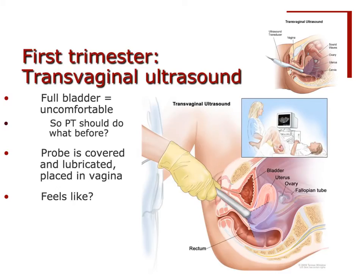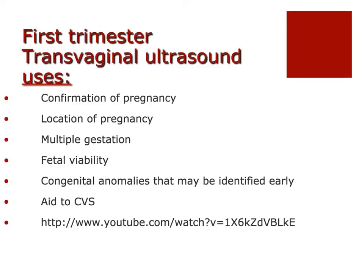In the first trimester, how is this ultrasound done? It's normally done vaginally, because it's not until the end of the trimester that the uterus is even coming out above the symphysis pubis. We want her to have an empty bladder because a full bladder will cause discomfort when the probe is placed — it will feel like pressure, not pain. The purposes of this ultrasound are to date the pregnancy, confirm the pregnancy, and check viability — confirming it's intrauterine and not ectopic.